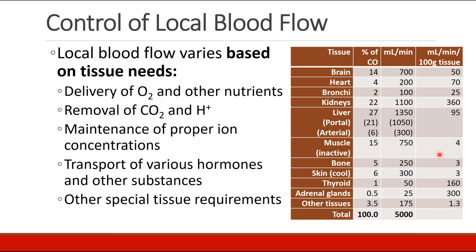Blood flow to different tissues is based on what the tissues need — in order to deliver oxygen and nutrients, remove acid and carbon dioxide, maintain proper ion concentrations, transport hormones, and any other requirements.